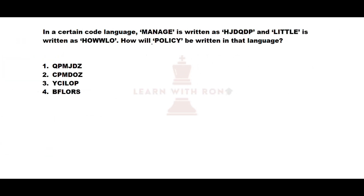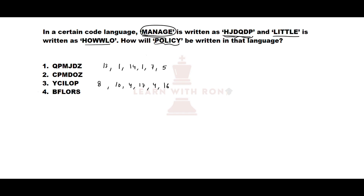Let us see our next question — a coding and decoding question. They have given that 'manage' is coded in a certain format and 'little' is coded in another format. They ask how 'policy' is coded in that language. For 'manage', writing numbers for each letter: M=13, A=1, N=14, A=1, G=7, E=5. The coded letters correspond to adding 3 to each value: 13+3=16, 1+3=4, 14+3=17, 1+3=4, 7+3=10, 5+3=8. So the pattern is each letter's position number plus 3 gives the coded letter.